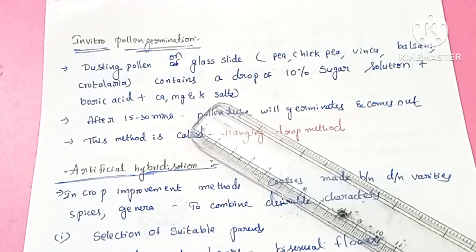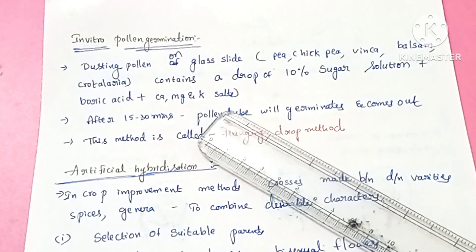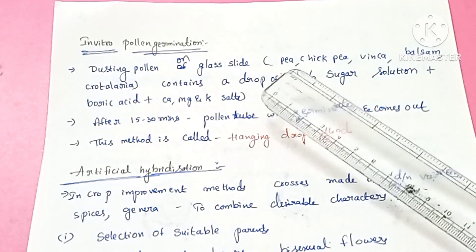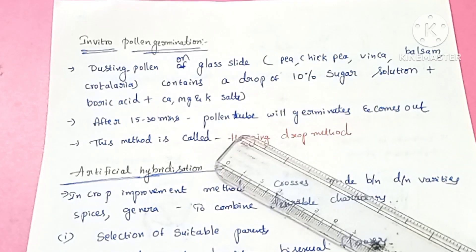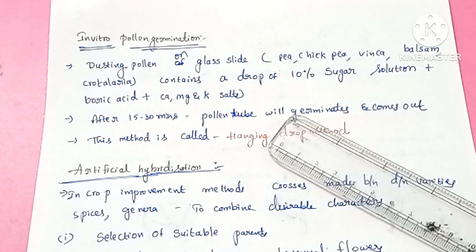One drop of the solution is placed onto a glass slide. Then flowers — such as pea, chickpea, Vinca, or balsam — are dusted over the drop. The slide is kept for 15 to 30 minutes, during which time the pollen grain germinates and the pollen tube starts to form.